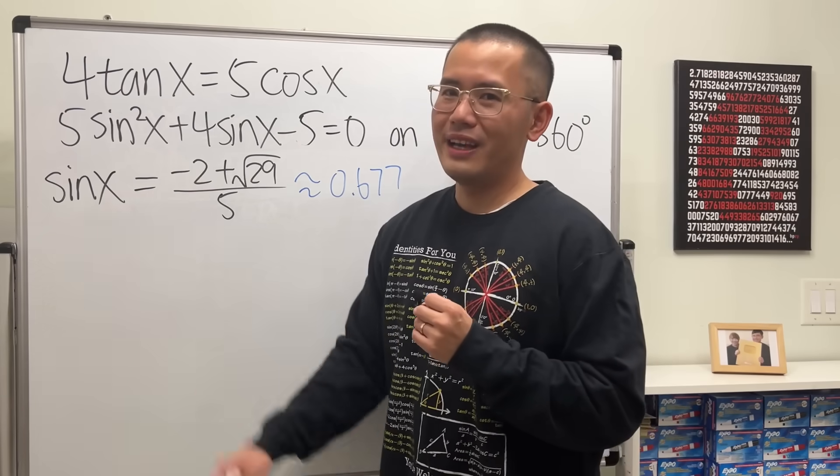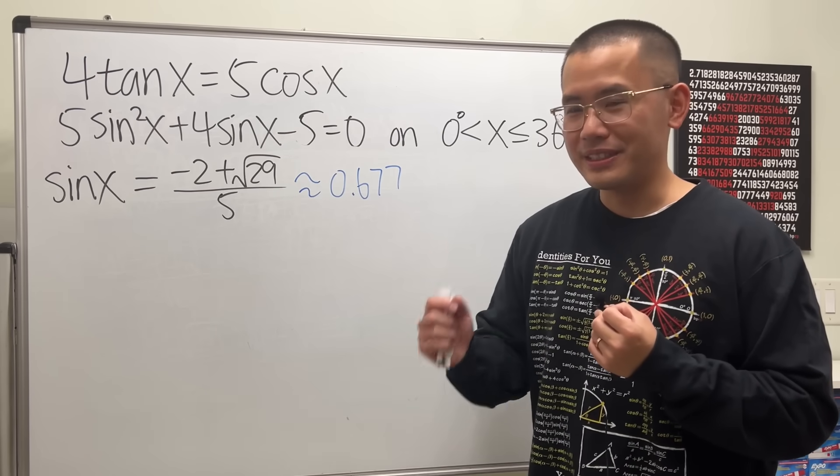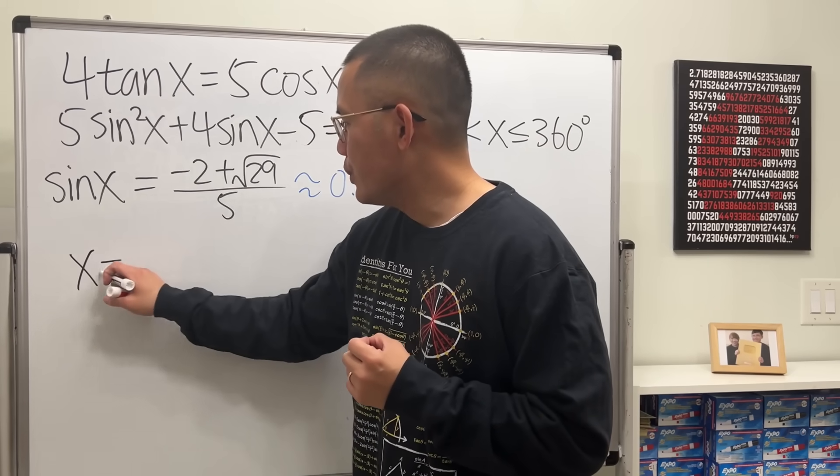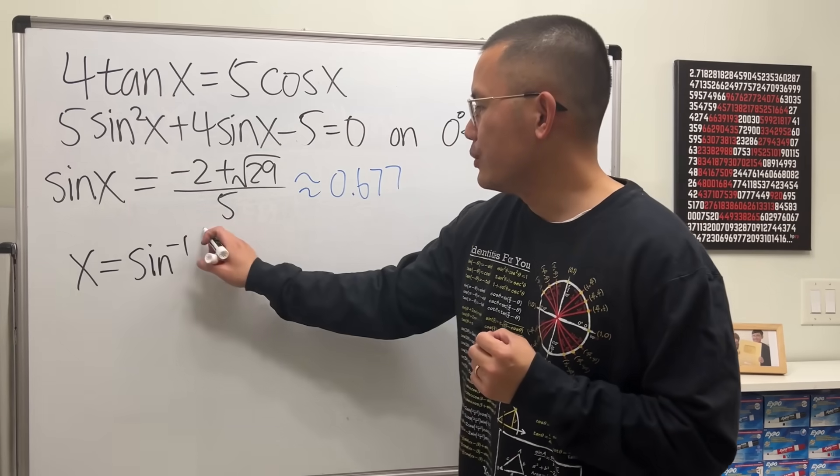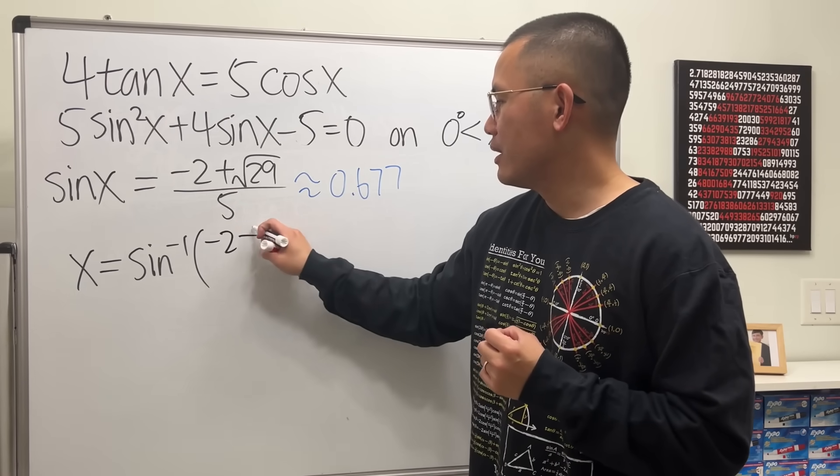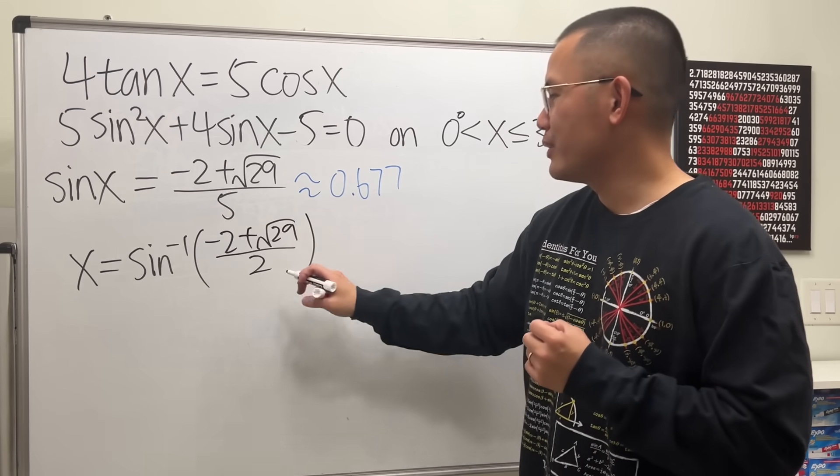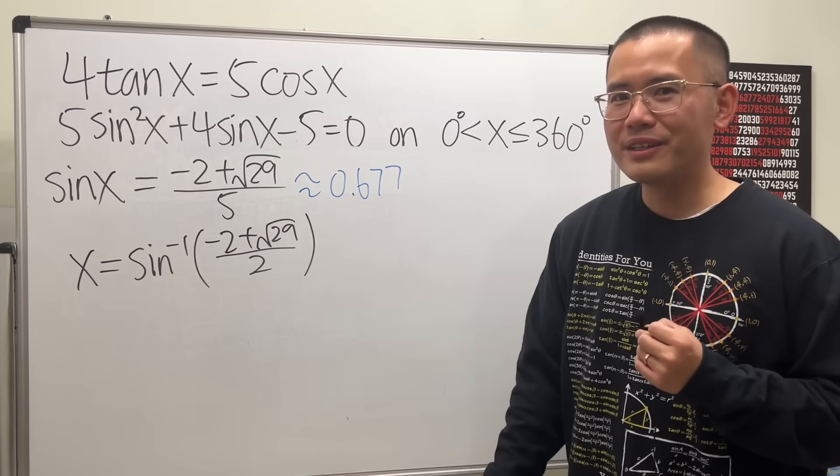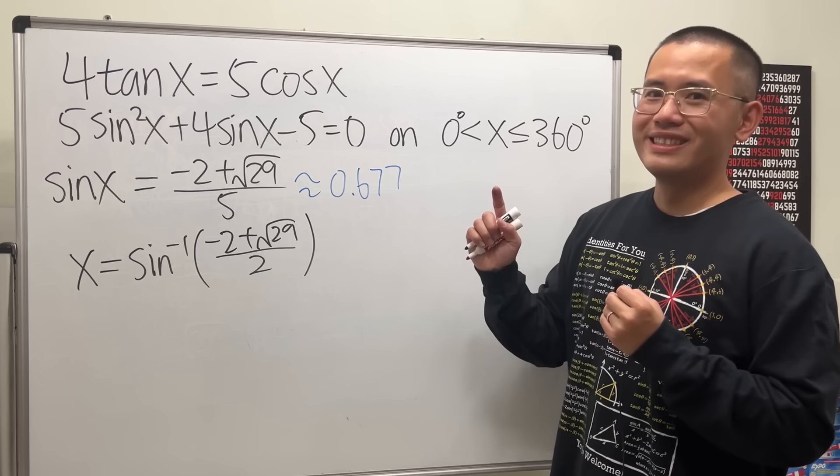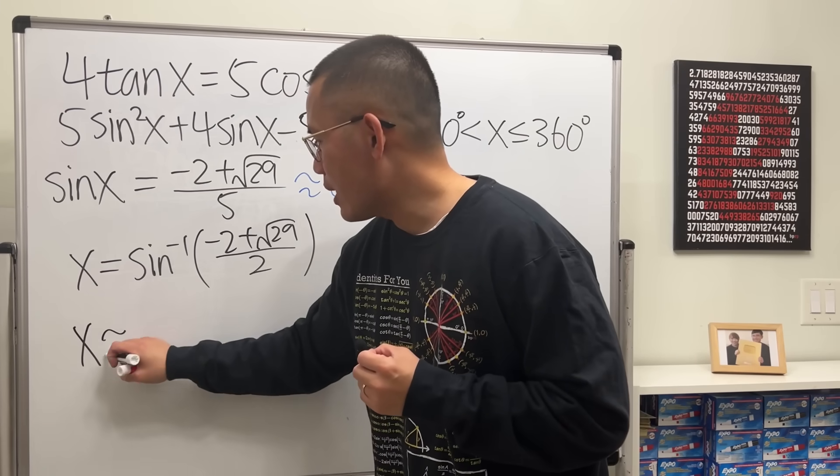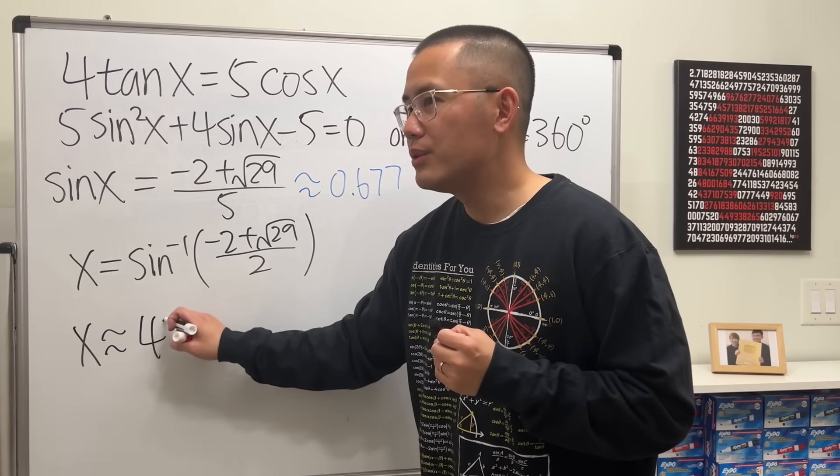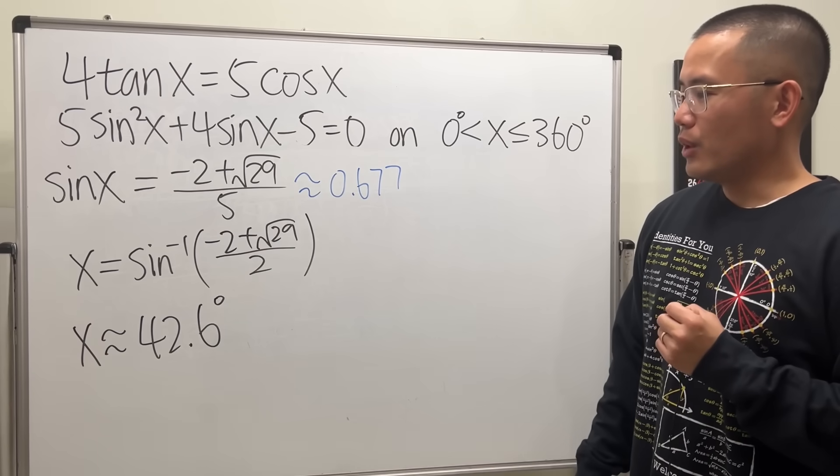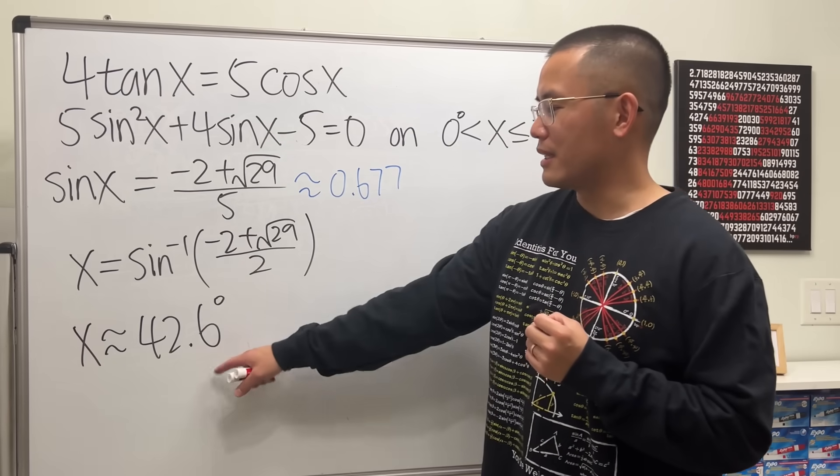So we will only say sine x is equal to this right here. Now we have to solve for x. And to do so, we will just use the inverse sine function. Because this is not going to give us a nice number. Therefore, x is equal to inverse sine. And you can put this onto your calculator. That way, the answer will be more accurate. But if you enter this right here, it should be also good enough. And then if you just enter this on your calculator, and make sure your calculator is in the degree mode, then I will tell you x is approximately 42.6 degrees. Alright, so this is the answer from the official answer key. So I am just going to keep it like this as well.